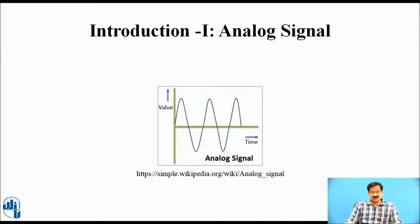Suppose this is a voltage waveform whose positive maximum is 10V and negative maximum is minus 10V. It means this sinusoidal voltage will have values starting from 0 to plus 10V or 0 to minus 10V. A continuous signal will have all possible values between 0 to 10V.